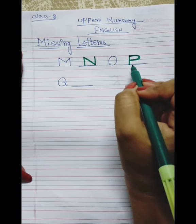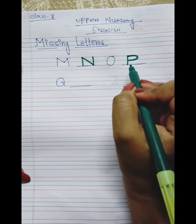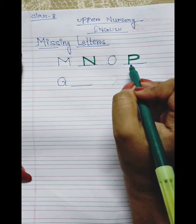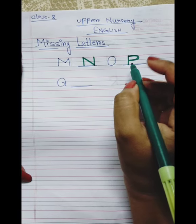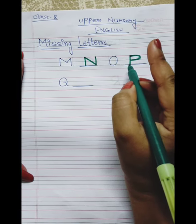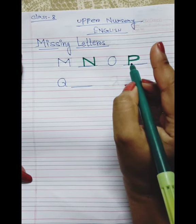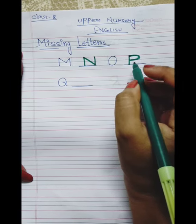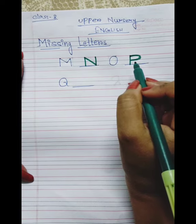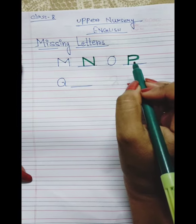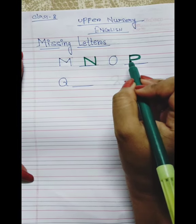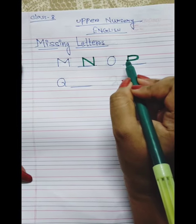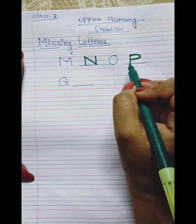I made P. P is the example of which line? It is the example of wave curve. I taught you children how to draw a wave curve. I made P.